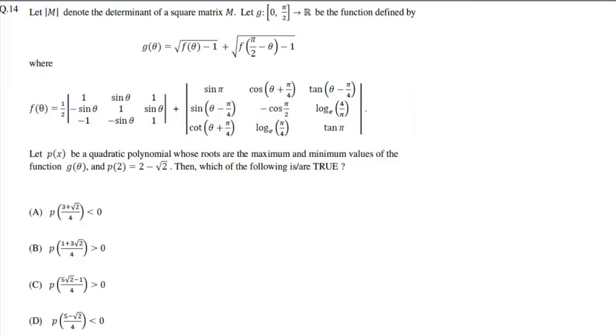In this question we are given a determinant of square matrix m and we have defined a function g such that g(θ) = √(f(θ) − 1) + √(f(π/2 − θ) − 1).